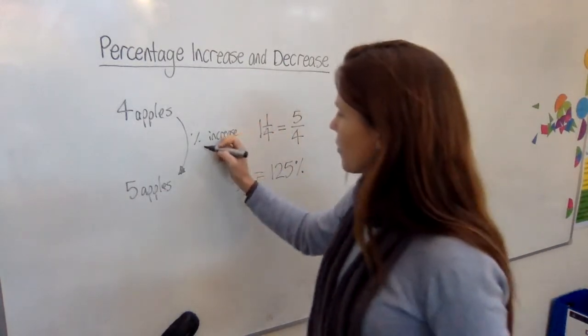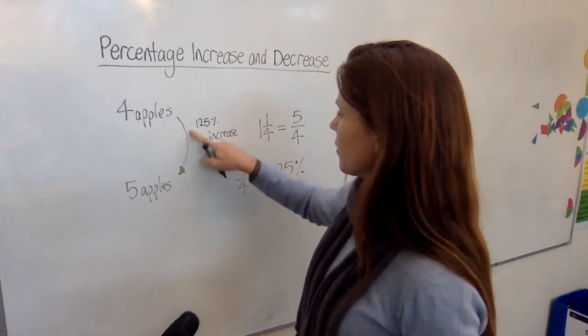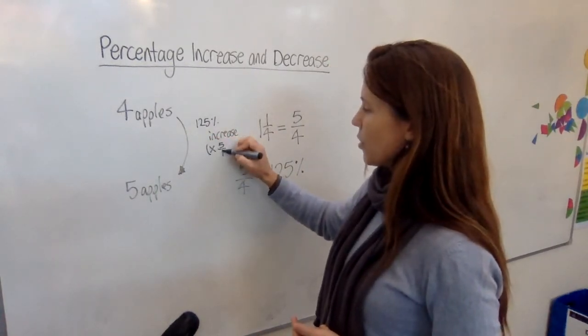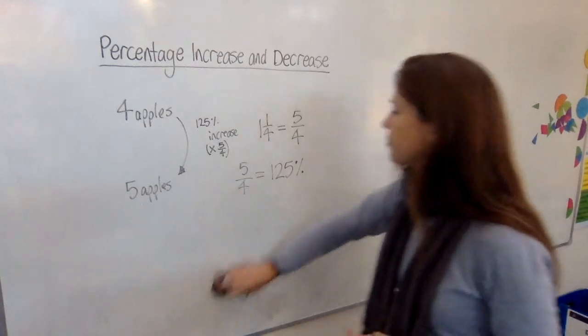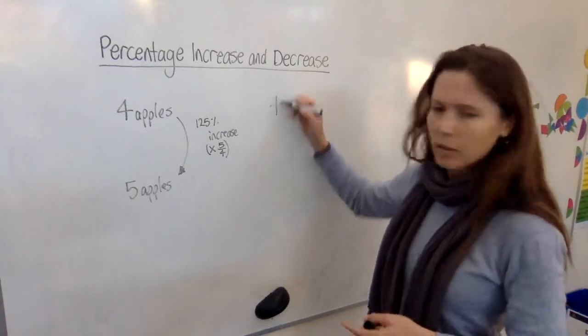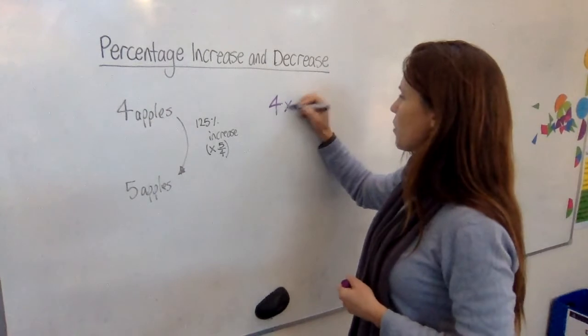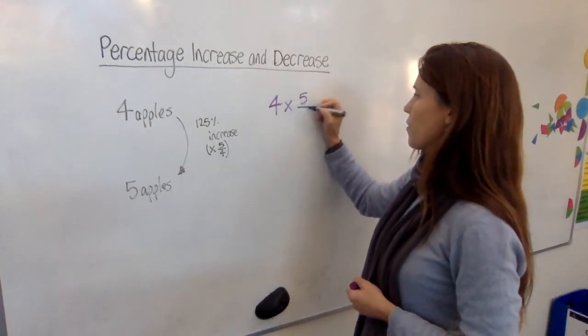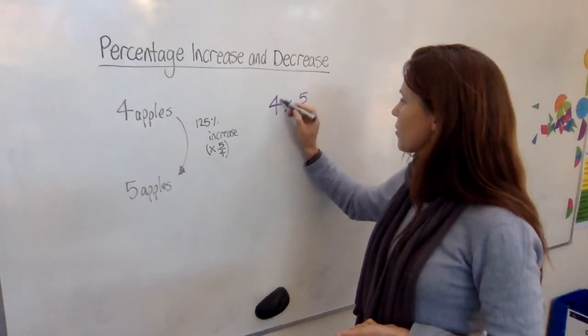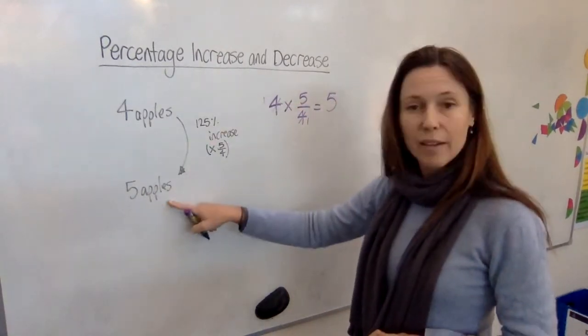So, I could say that I've got 125% increase here. I could also say that I've multiplied it by five and a quarter. Now, what do I mean by that? Well, if you take four, and you multiply it by five quarters, what do you get? Well, these fours are going to cancel, aren't they? You get five, which is exactly what we now have.